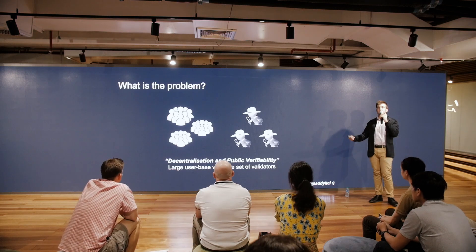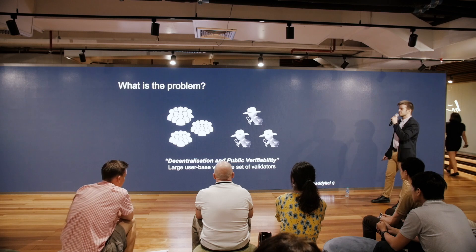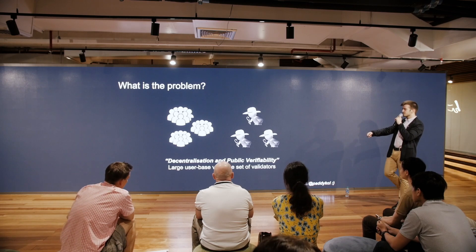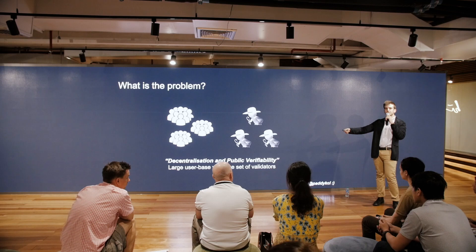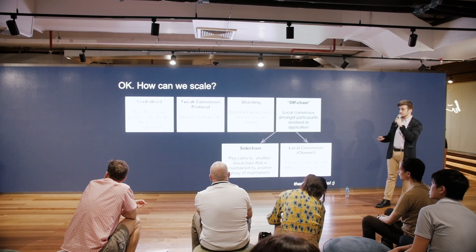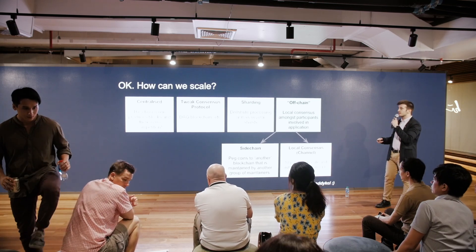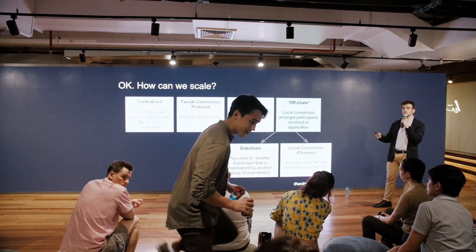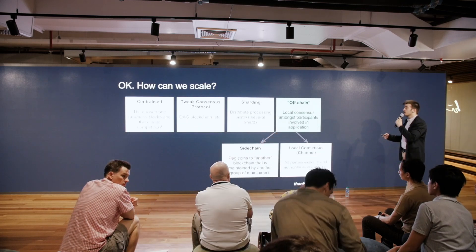Why don't we just go with a centralized solution? We have this dilemma: we want lots of users and transactions but also want the system to be censorship resistant and secure. There are various approaches — centralized (which we don't want), DAGs, and sharding. I'd argue that current sharding approaches are more of a layer-two approach, but that's another discussion.